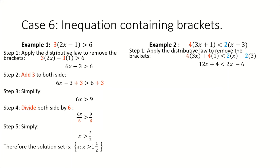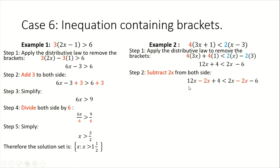What we want to do is group the like terms on one side — group the x terms on the left and the constant terms on the right. We have 12x already on the left, so we focus on the positive 2x on the right. To transfer this 2x to the left, we do the opposite operation — subtract 2x from both sides. We state this as 12x minus 2 plus 4 less than 2x minus 2x minus 6. When we simplify, we end up with 10x plus 4 less than negative 6.